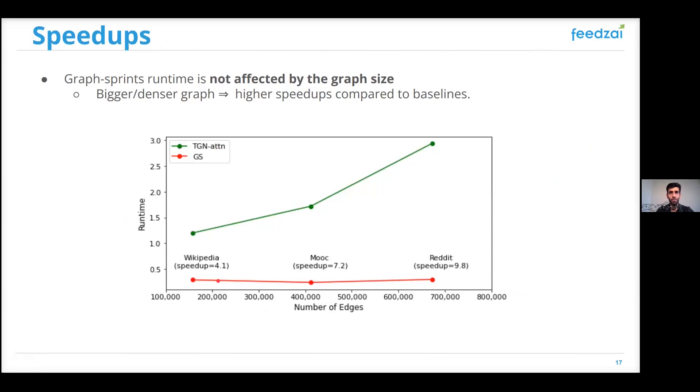An essential characteristic of our Graph Sprints method is that it is not affected by the graph size, since we only need the two nodes that were involved in the arriving edge, and no lookups in other nodes are being performed. So we can see here, compared to TGN, when the size or the number of edges of the network increases, our Graph Sprints runtime remains constant, while the TGN runtime increases.